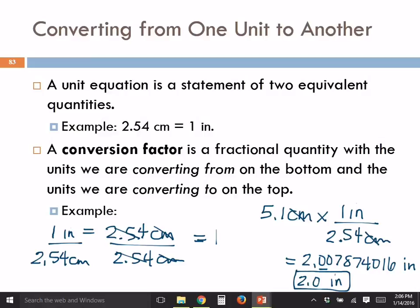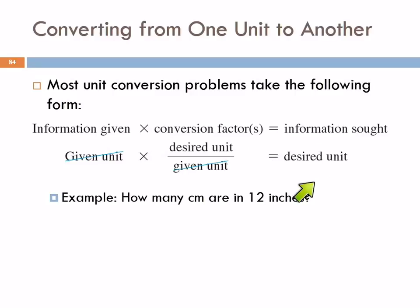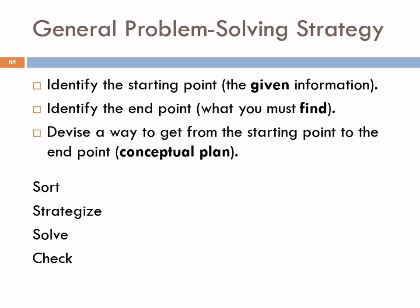This is the basic idea of dimensional analysis. The general format: you have your given unit, apply one or more conversion factors with the desired unit on top and the given unit on the bottom so they cancel, and you end up with your desired unit. The general strategy is to identify the starting point — what's given — and the end point — what you have to find.